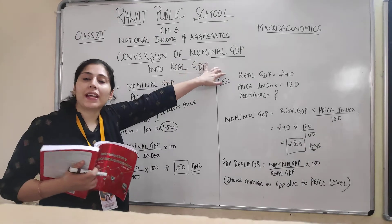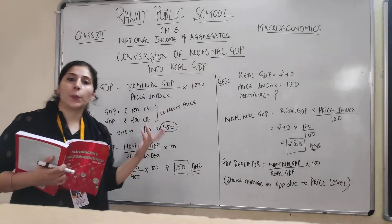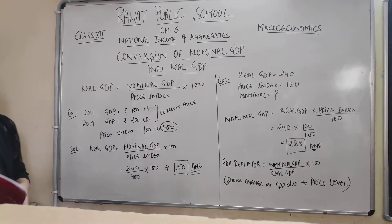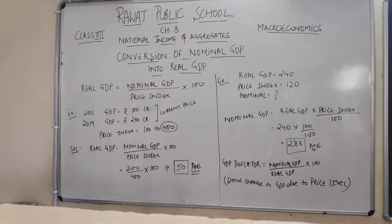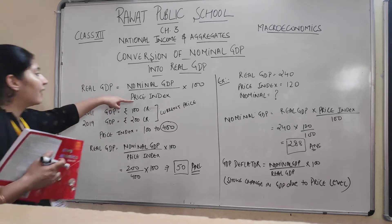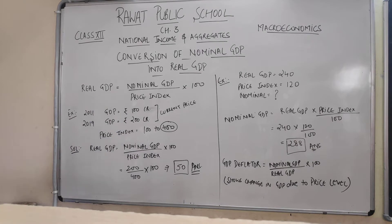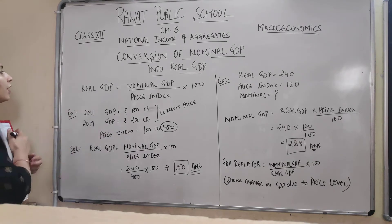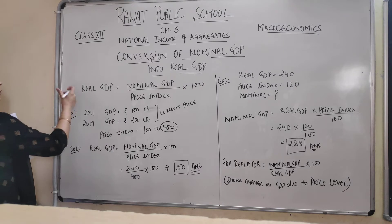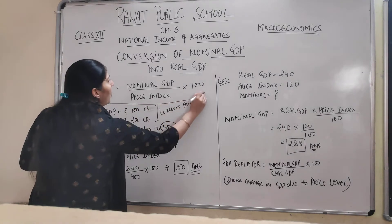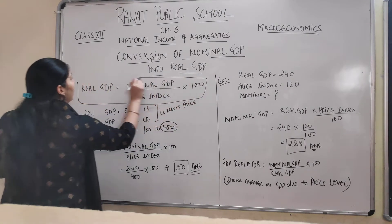If we have a nominal GDP given, we have to convert it using the price index. The formula is very simple and basic: Real GDP is equal to nominal GDP divided by price index, multiplied by 100.